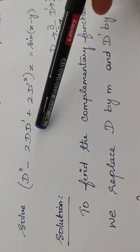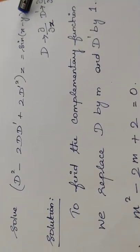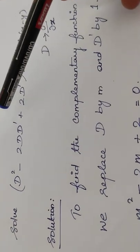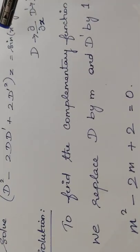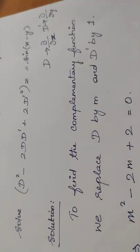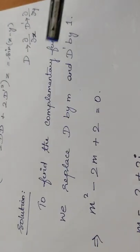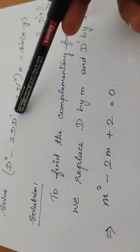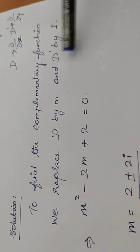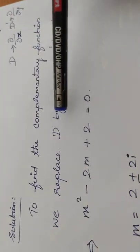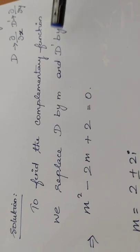The solution consists of two parts: the first part is the complementary function and the second part is the particular integral. The complementary function comes from the left-hand side and the particular integral comes from the right-hand side. After finding both separately, we combine them for the answer. To find the complementary function, the basic procedure is to replace capital D by m and D' by 1.